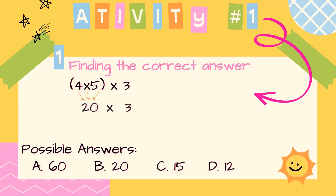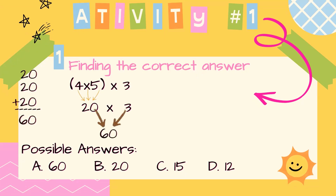20 times 3. Remember, we can use repeated addition: 20 plus 20 plus 20. That makes 60. So my answer is 60. The first possible answer is the correct one, letter E.